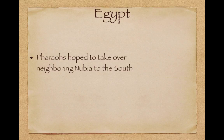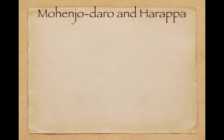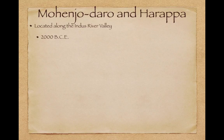Pharaohs hoped to take over neighboring Nubia to the south and searched for valuables such as gold, ivory, and ebony located there. Jumping over to Mohenjo-daro and Harappa, located along the Indus River Valley around 2000 BCE.